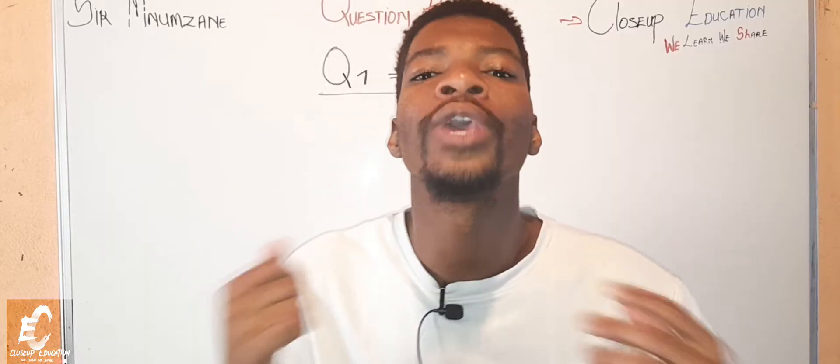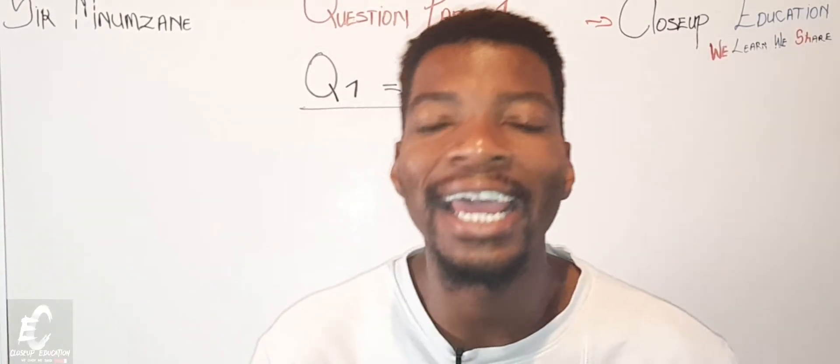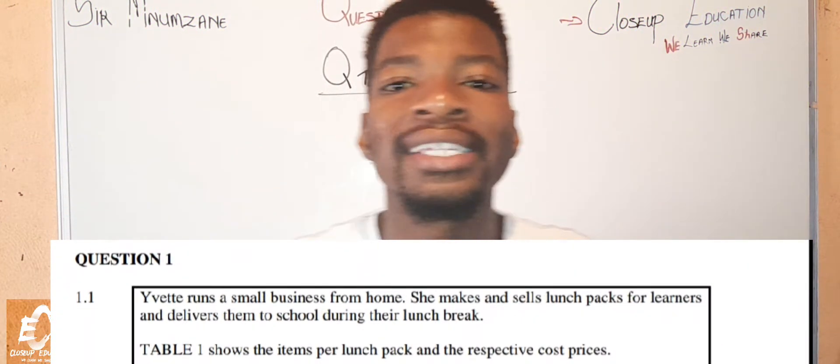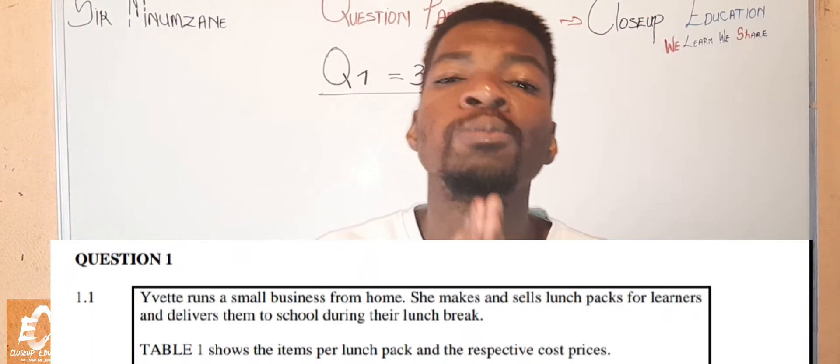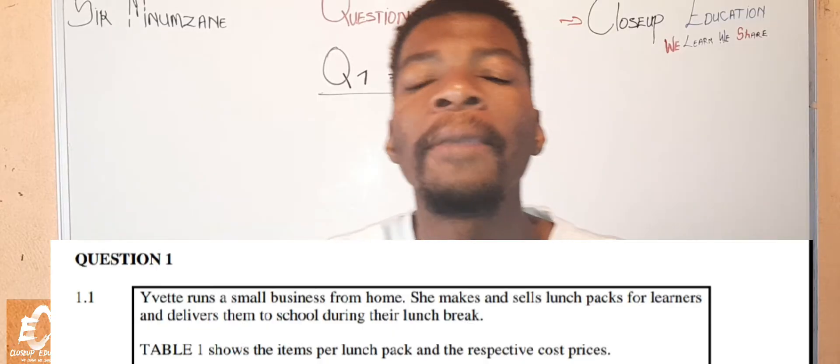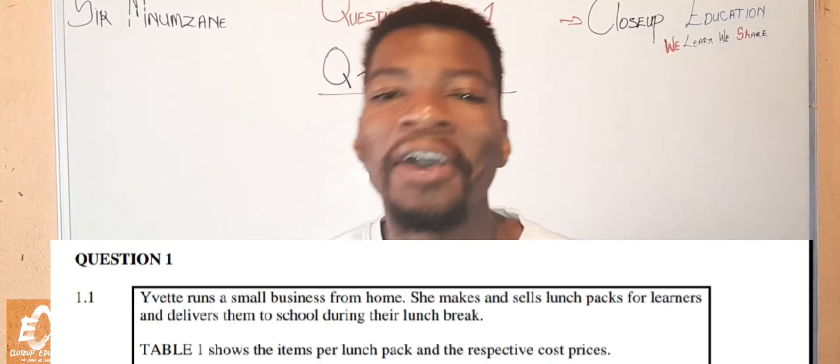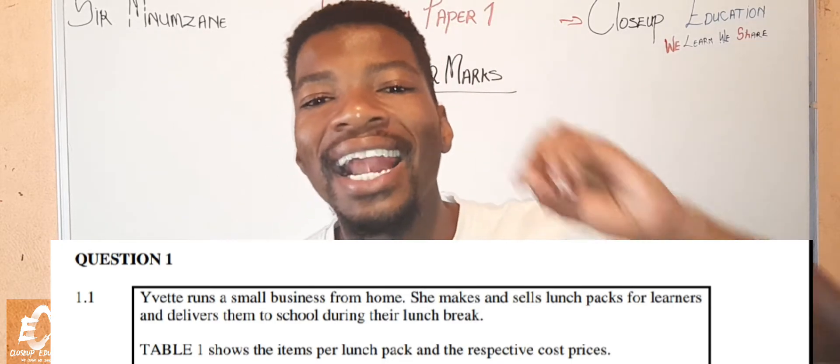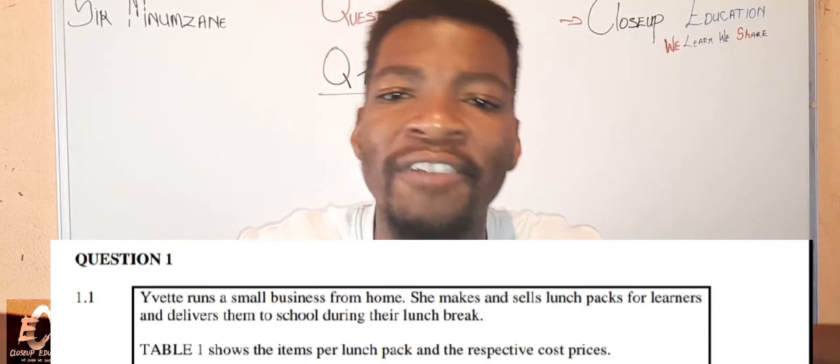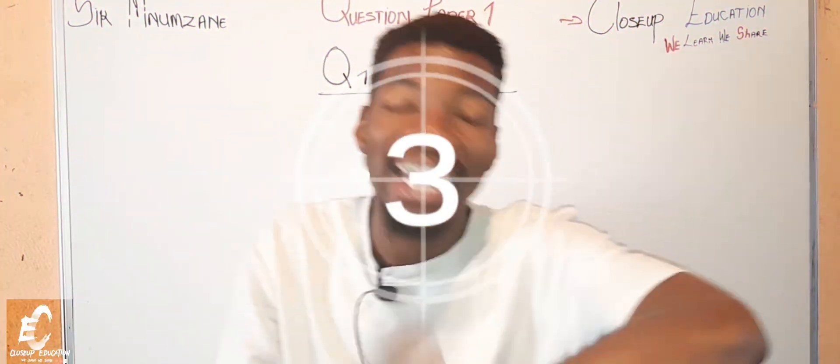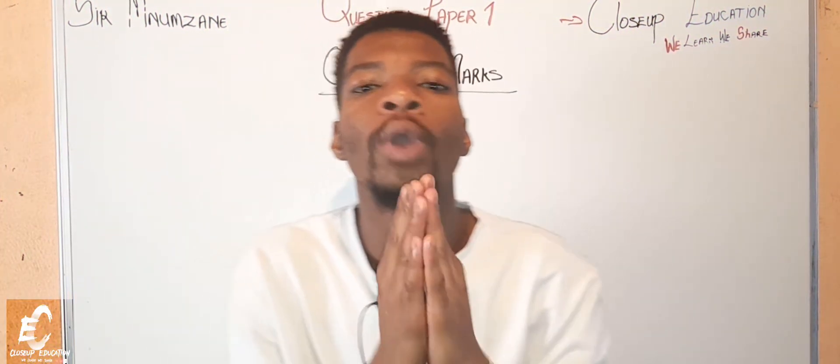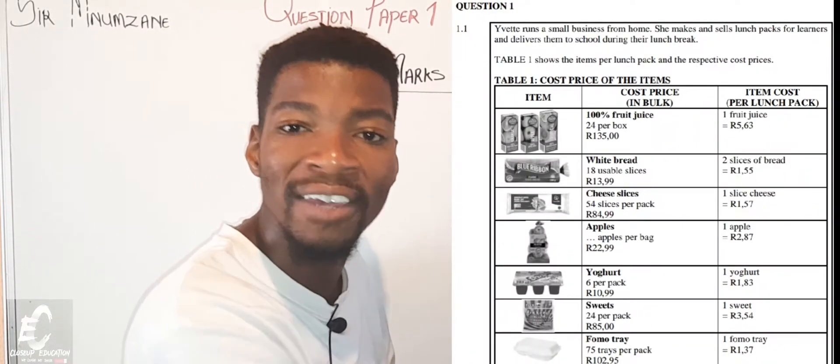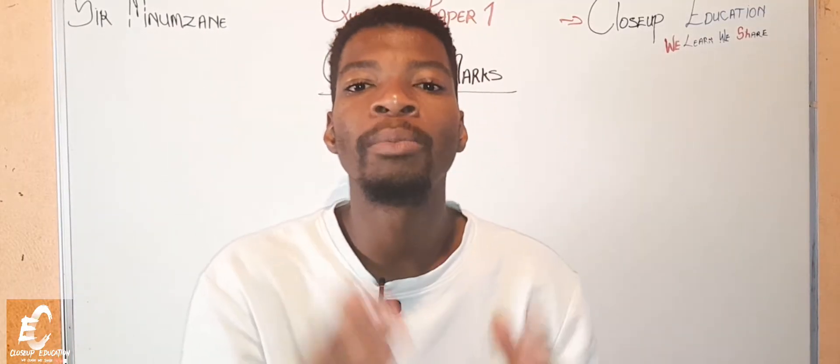Before you could answer any question one questions, we have to read to understand our question one scenario. What does it say? It says Verdi runs a small business from home. She makes and also sells lunch packs for learners and delivers them to school during their lunch break. It is a straightforward situation. We know that there is less time on exam, but then you have to scan whatever diagram you are given or scenario you're given to understand it a little more better.